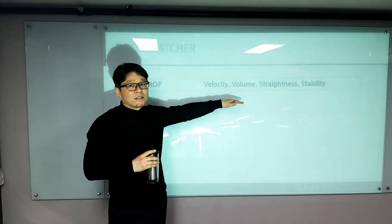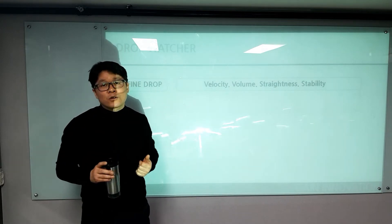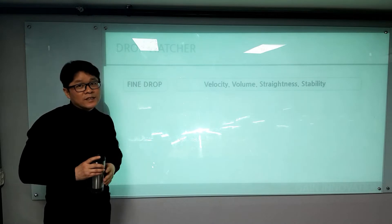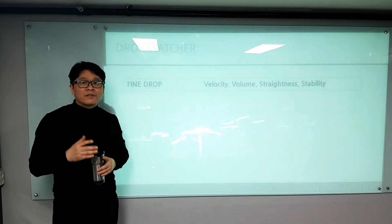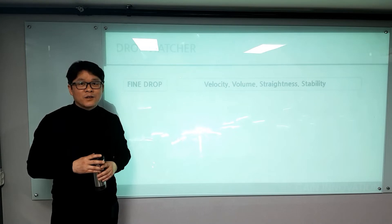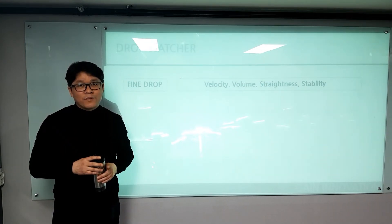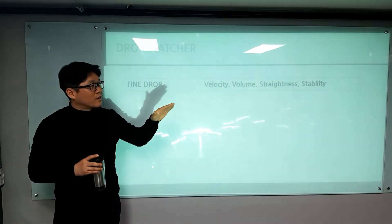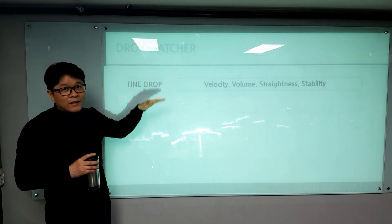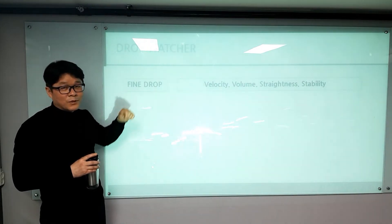After that, we need straightness. If the nozzle has a deviation in pressure, we cannot make good image quality. Also, the last factor is stability. After 10 seconds of printing, if the nozzle is missing, we cannot apply this ink to the real printing system. So stability is the last one. Those four factors define the fine drop.